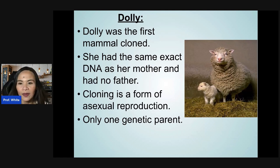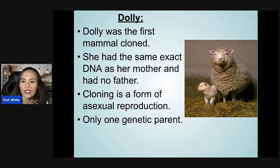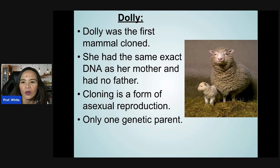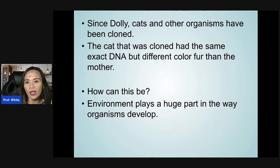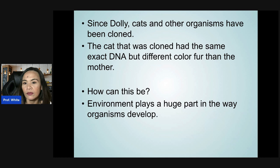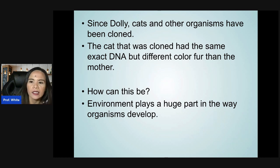An example of a cloned organism is Dolly. Dolly is the first mammal cloned — she had the same exact DNA as her mother and had no father, so cloning is a form of asexual reproduction. Since Dolly, cats and other organisms have been cloned. Interestingly, a cloned cat had the same exact DNA but different color fur than its mother, because environment plays a huge part in the way organisms develop.